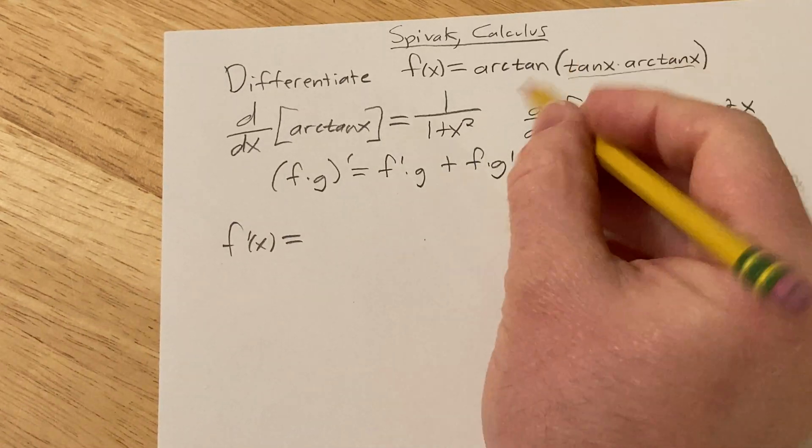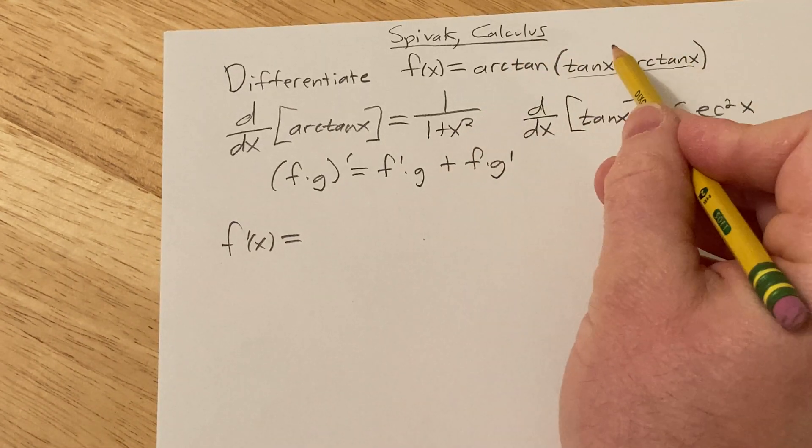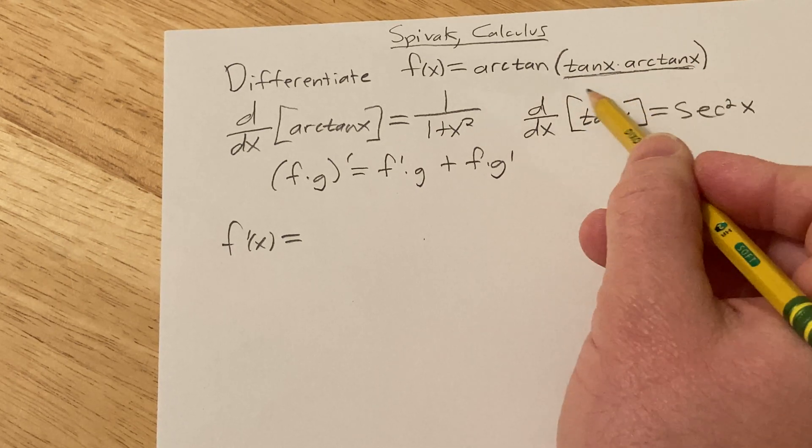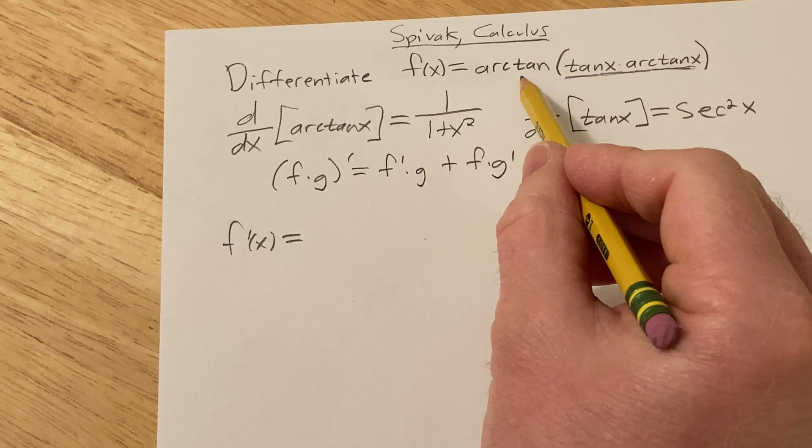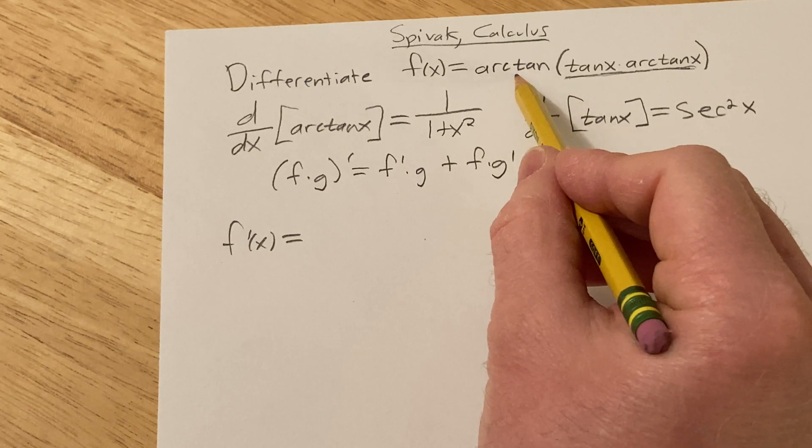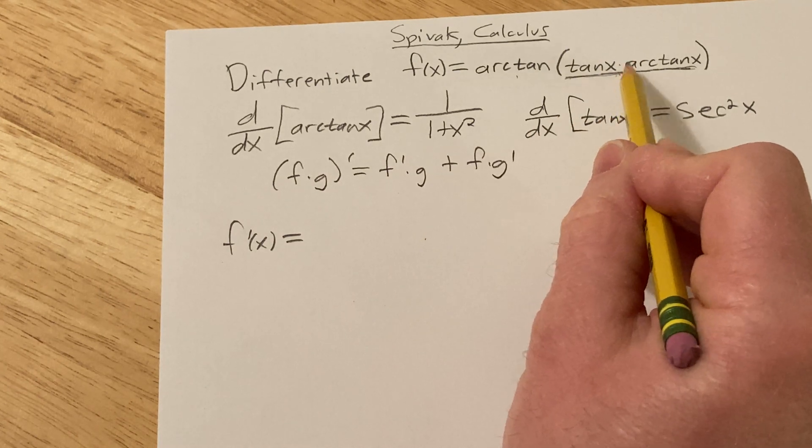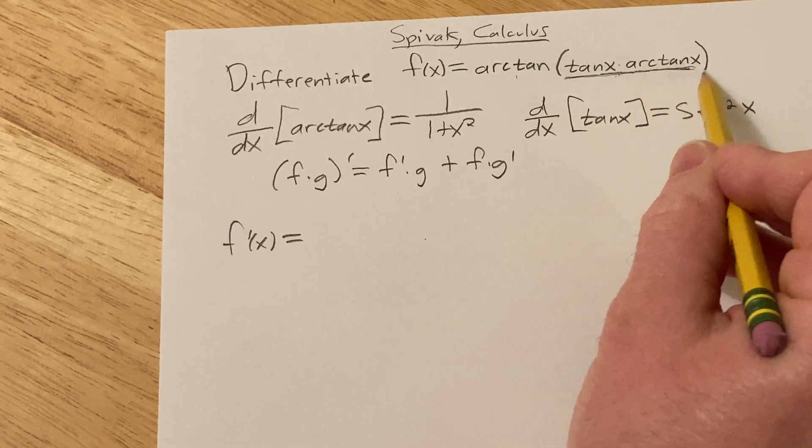I'm going to show you how to do it. So we're going to take the derivative of arctan of all of this stuff here. All of this stuff here is your inside. So the chain rule says that when you take the derivative, you take the derivative of the outside function, that means we're going to use this formula here, and you evaluate it at the inside, and then you multiply by the derivative of the inside.